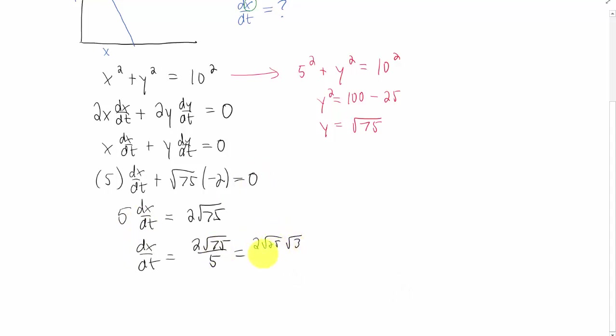We can say that 75 is 25 times 3. The only reason I would do that is because I recognize that the square root of 25 is going to cancel with this 5, and it's just going to leave us with the 2 root 3.